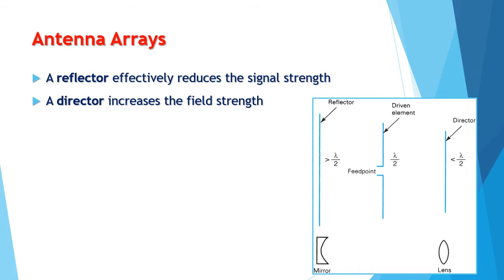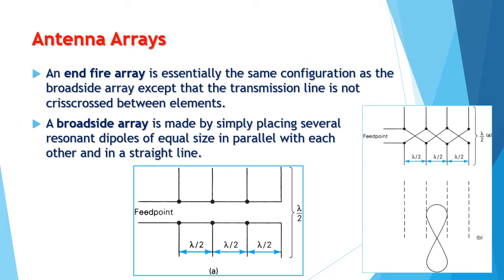A parasitic element that is longer than the driven element is called a reflector. A reflector effectively reduces the signal strength in its direction and increases it in the opposite direction, acting like a concave mirror for light. A director increases the field strength in its direction and reduces it in the opposite direction, acting as if it were a convex lens for light. The end-fire array is essentially the same configuration as the broadside array, except that the transmission line is not criss-crossed between elements. A broadside array is made by simply placing several resonant dipoles of equal size in parallel with each other and in a straight line.